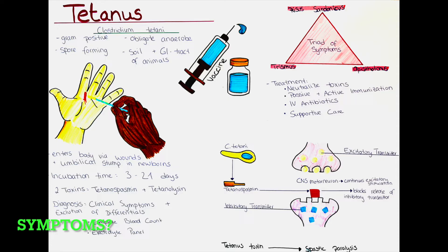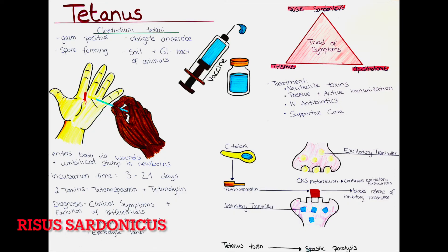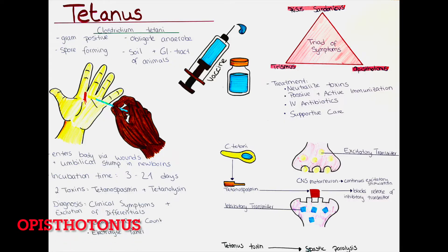Which symptoms does it cause? There is the classic triad of symptoms used to diagnose tetanus. First, trismus, which is the medical term for lockjaw — the inability to open the mouth due to spasms of the muscles in the jaw. Second, risus sardonicus, often described as a grinning appearance caused by involuntary contraction of the facial muscles. And third, opisthotonos, a severe arching of the back caused by sustained muscle contraction. While these symptoms are characteristic for tetanus, it is important to remember that most patients will not present with all three symptoms, and sometimes none of them.